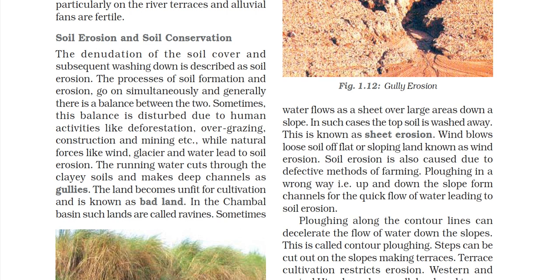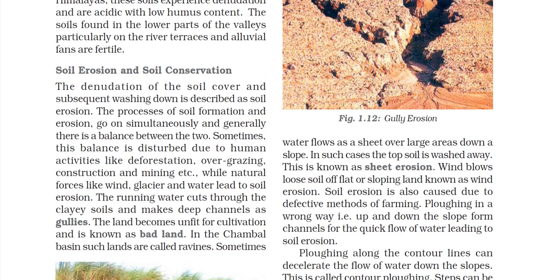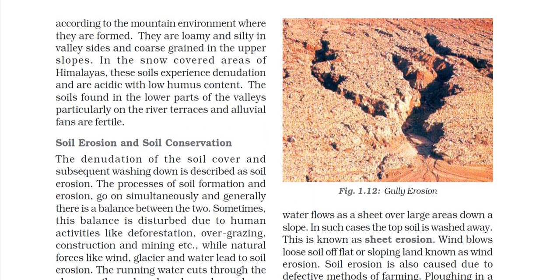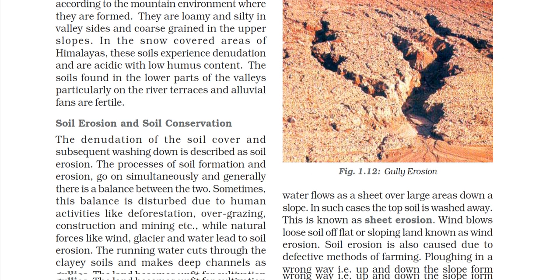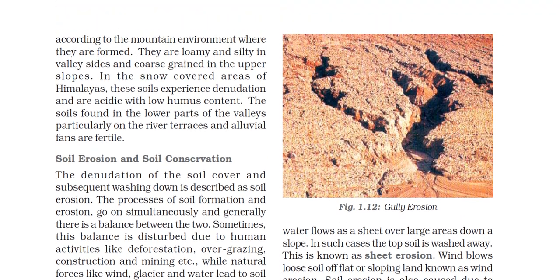Natural forces like wind, glacier, and water also cause soil erosion. Running water cuts through the clayey soil and makes deep channels known as gullies. You can see the diagram of the gully. The land becomes unfit for cultivation and is called bad land. In the Chambal basin, such land is called ravines. Sometimes water flows as a sheet over large areas down the slope, and in such cases the top soil is washed away — this is called sheet erosion.